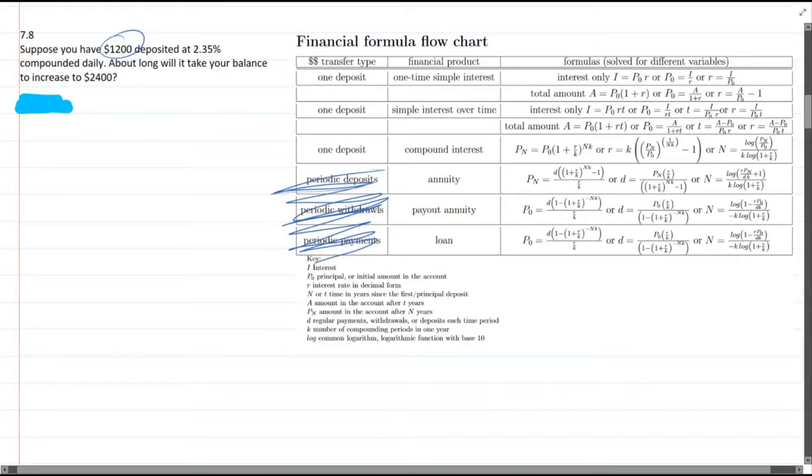Now it's compounded, which means it's not simple interest. So we're right away down here on the third row. And as to which of these formulas do we want to use?